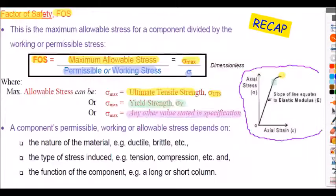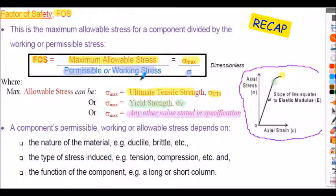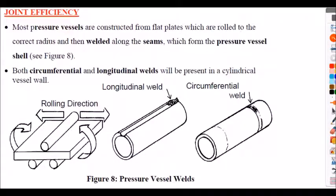Also recapping from last week: the factor of safety is the maximum allowable stress over the permissible or working stress. The factor of safety will crop up again in some questions this week, applied to either the ultimate strength or the yield strength as given in the question.